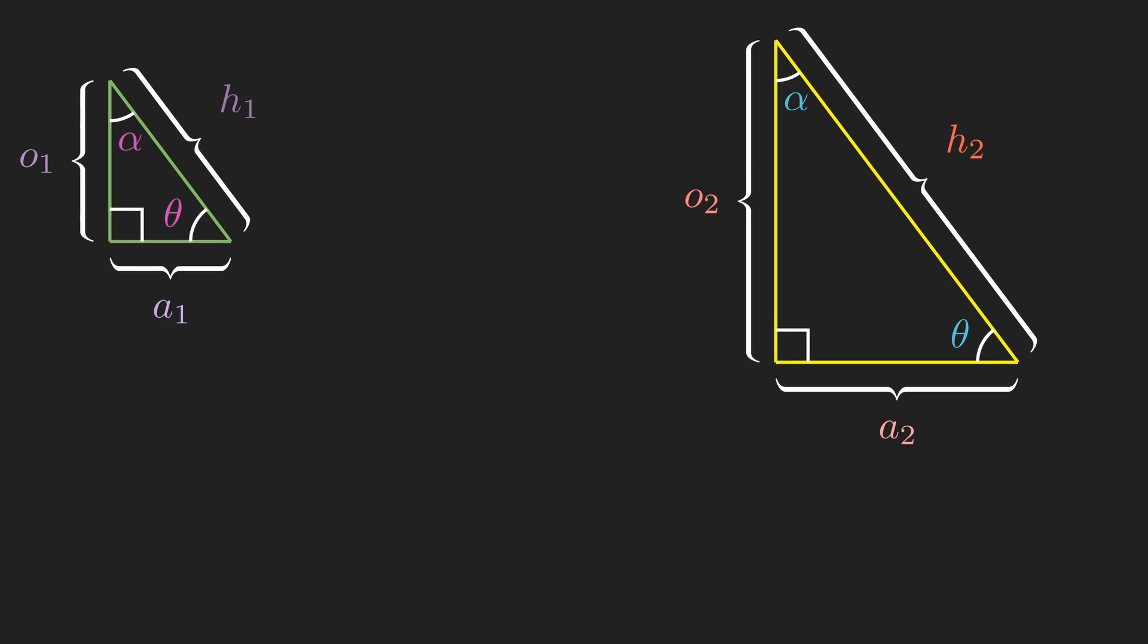We can express this as the hypotenuse of one triangle divided by the hypotenuse of the other being equal to the adjacent of one triangle divided by the adjacent of the other, and so on for the opposite.